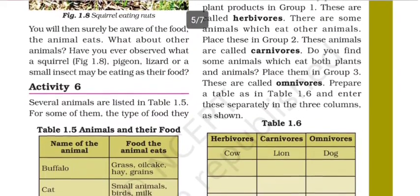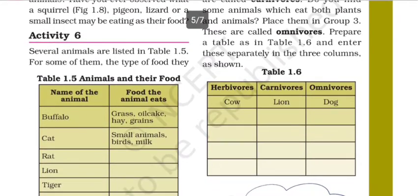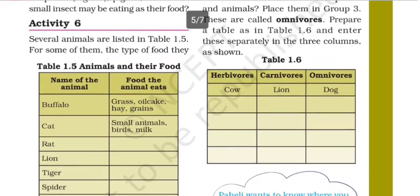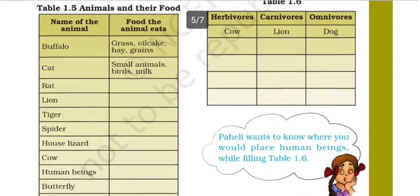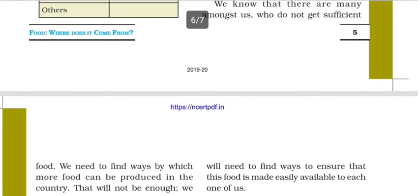In Table 1.5, look at the names of the animals, see their food habits and what they eat. Then, in Table 1.6, you need to place the animals into three categories: herbivores — like cow; carnivores; and omnivores — like dog. In this way, you have to fill this table so that at the end you would be able to name herbivore, carnivore, and omnivore animals.